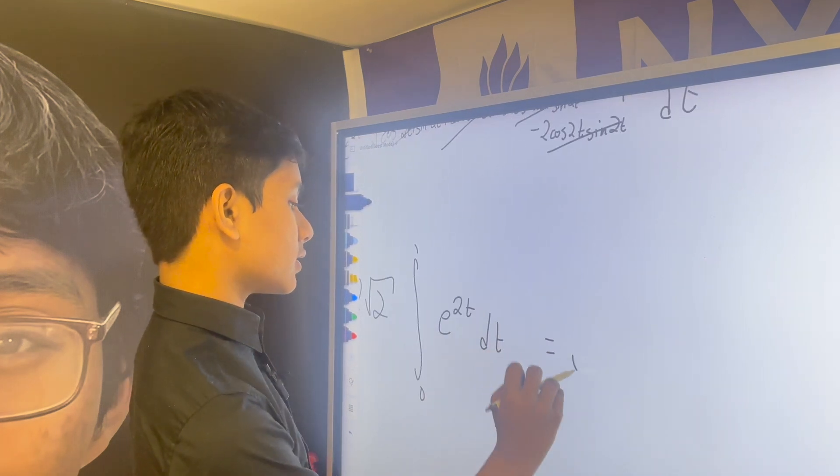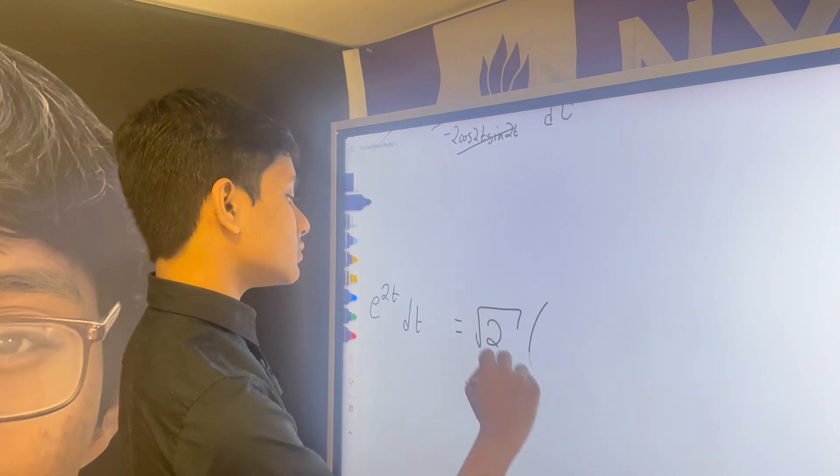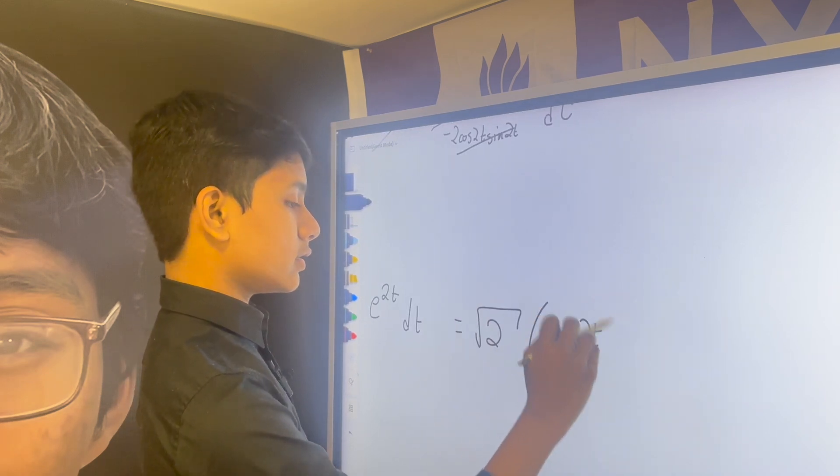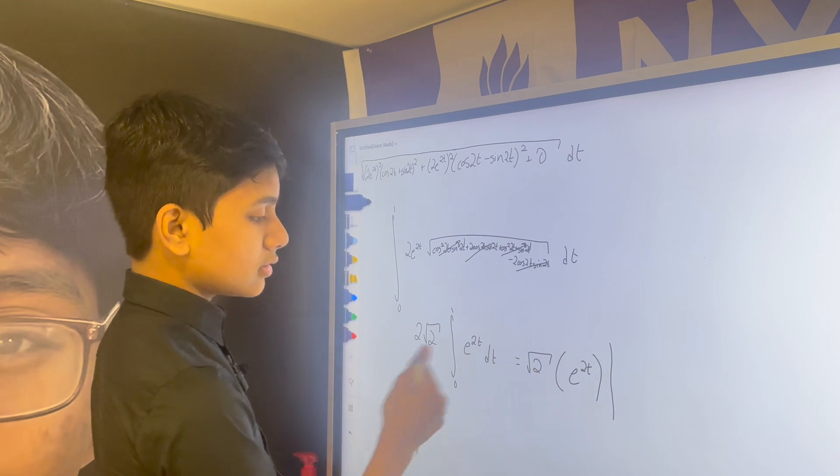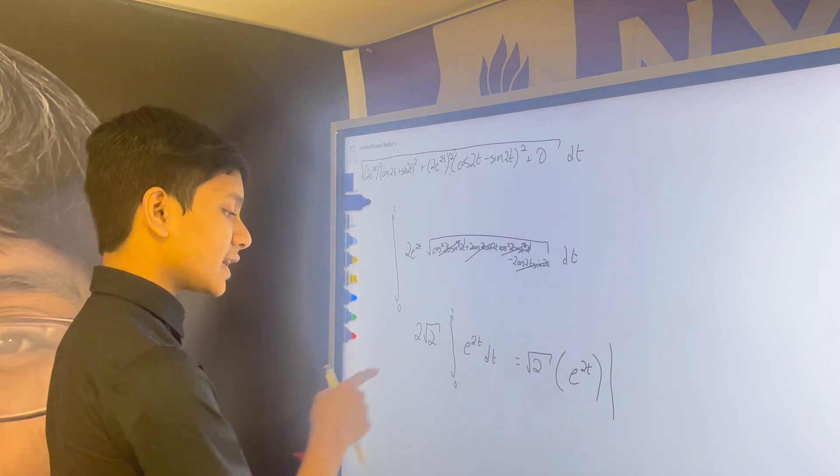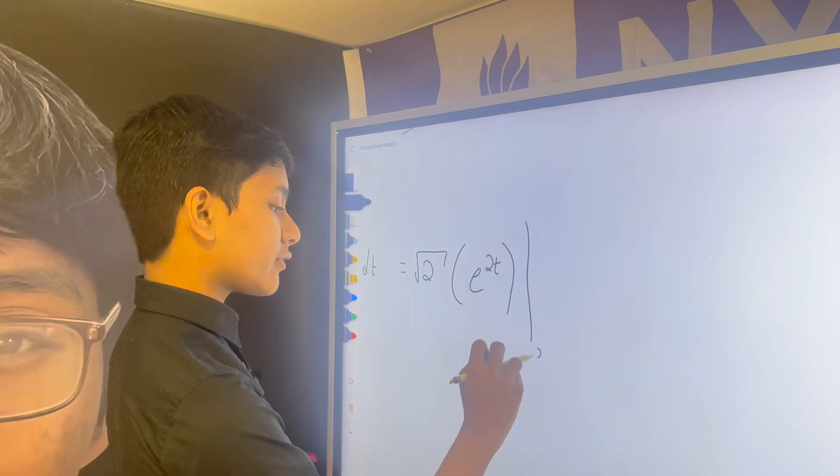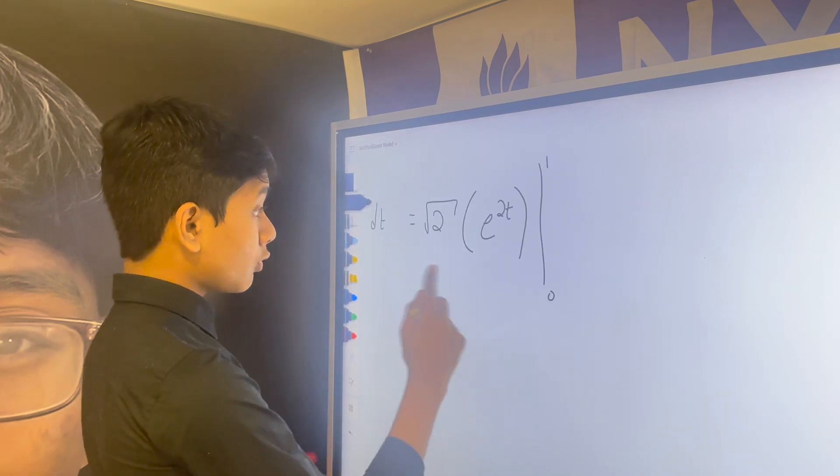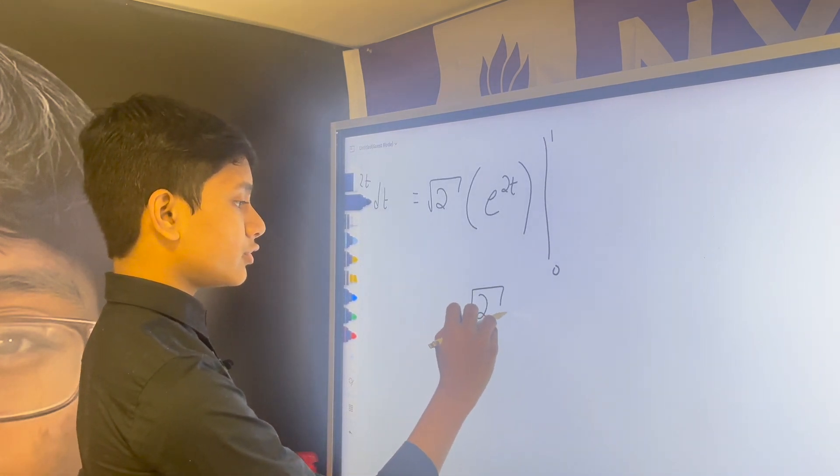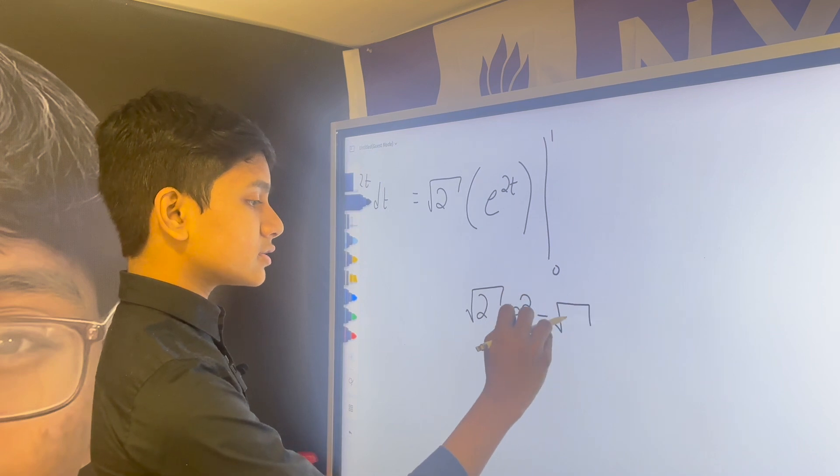which is just equal to the square root of 2 times e to the 2t since we add a half coefficient which cancels out this 2 after integration from 0 to 1 which is just the square root of 2 e to the 2 minus the square root of 2.